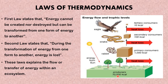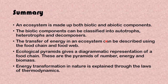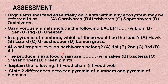These laws explain the transfer of energy within an ecosystem. In summary: an ecosystem is made up of both biotic and abiotic factors. The biotic components can be classified into autotrophs, heterotrophs, and decomposers. The transfer of energy in an ecosystem can be described using the food chain and food web. Ecological pyramids give a diagrammatic representation of a food chain — these are the pyramids of number, energy, and biomass. Energy transformation in nature is explained through the laws of thermodynamics.